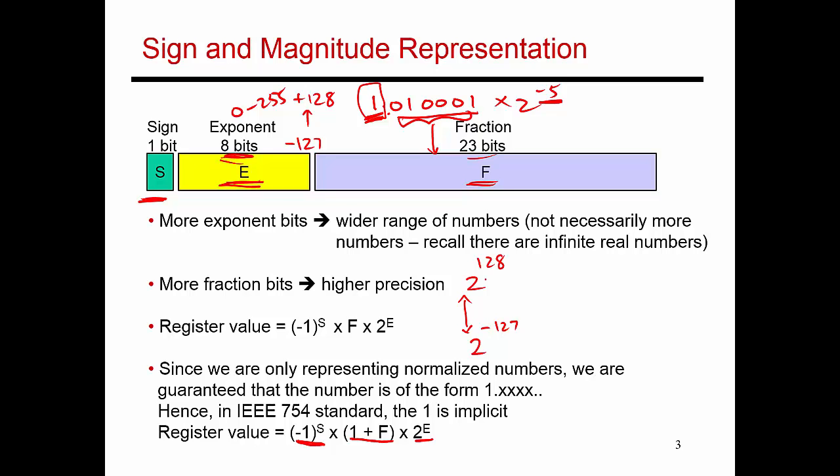And I'm only given 32 bits in my register. And with 32 bits, I can only represent 2 to the power 32 different values. So this means that in this vast range, I'm representing a small set of 2 to the power 32 rational numbers.